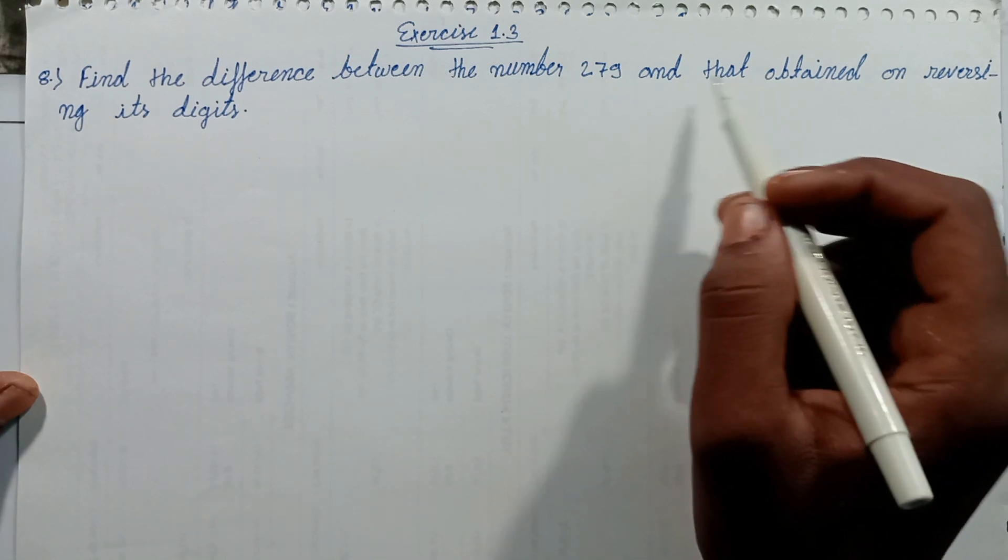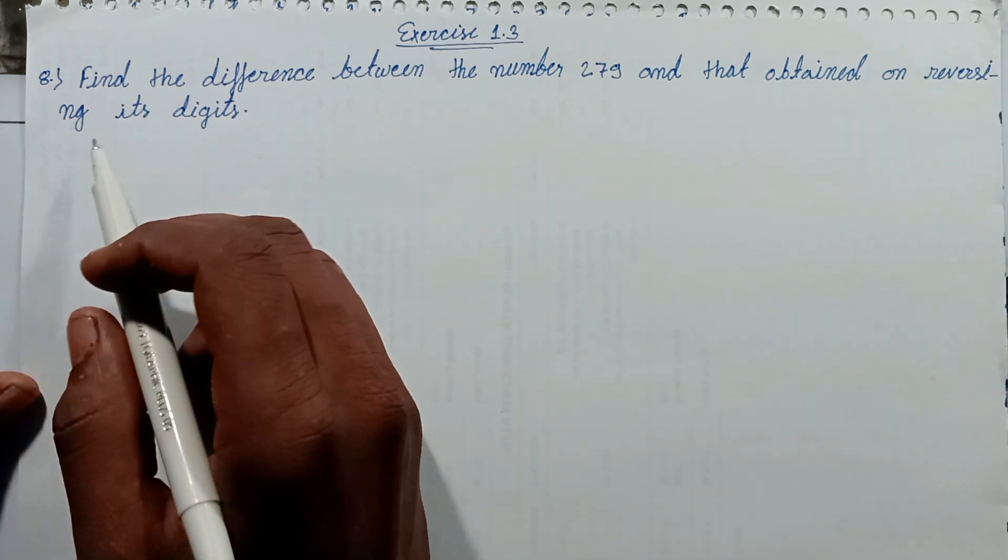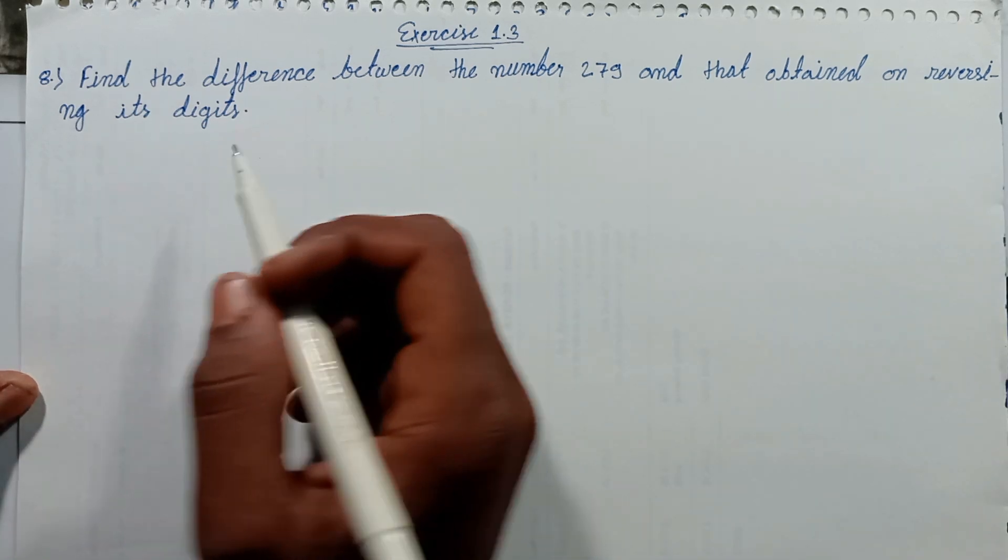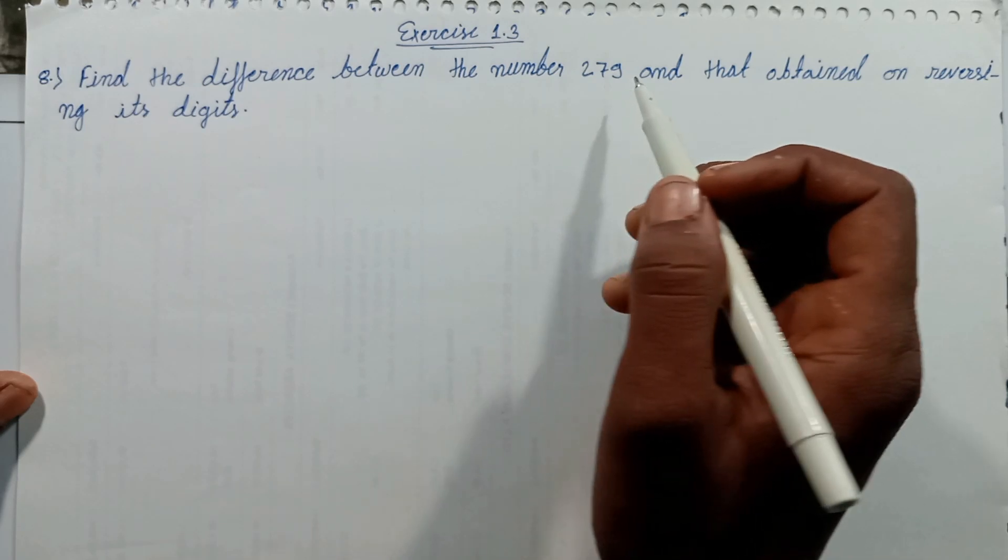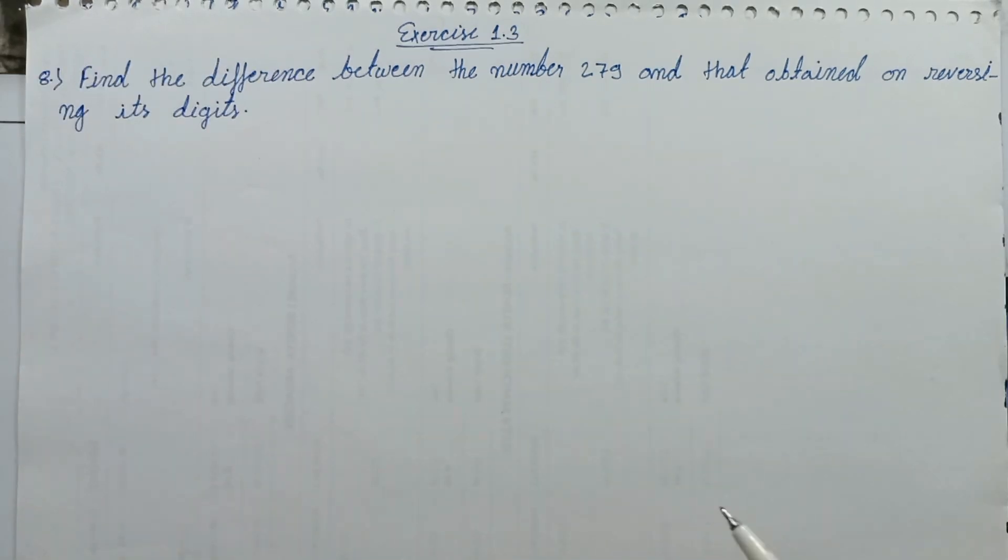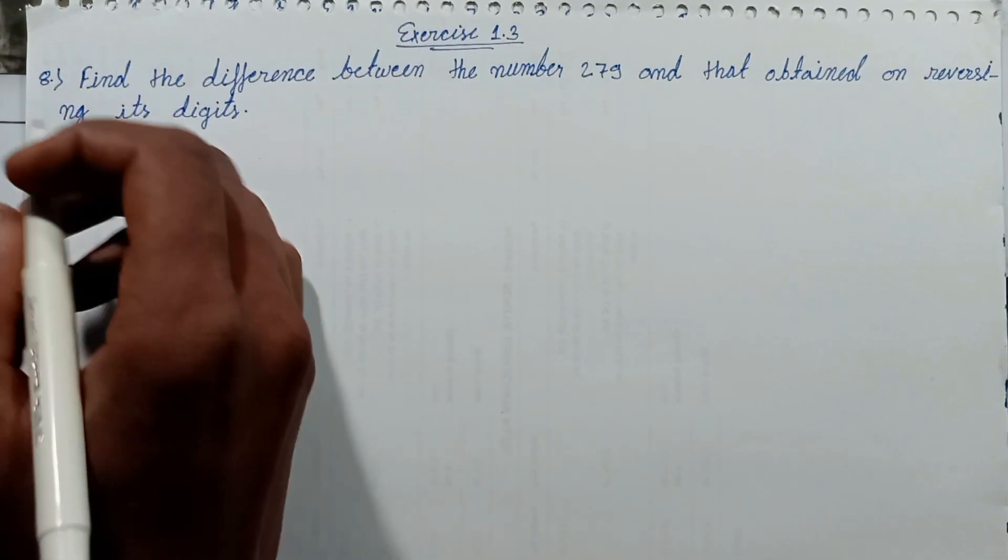Find the difference between the number and that obtained in reversing its digits. Write this number in reverse order and subtract it. Let's solve this question.